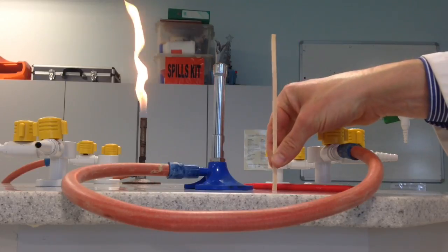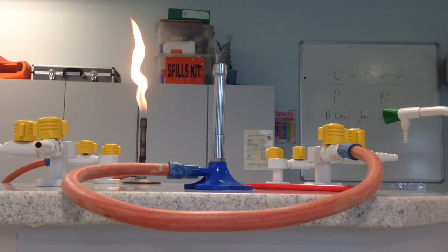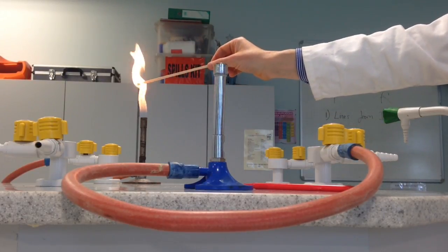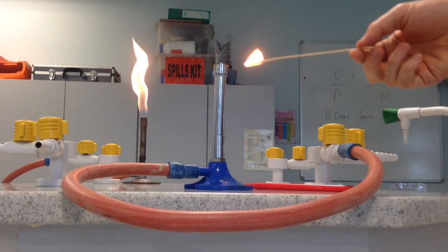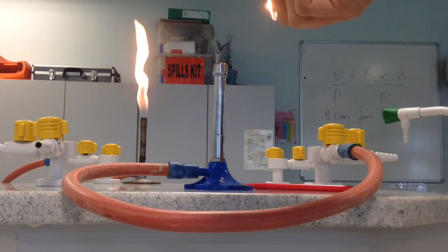Step two, you take your splint and you light your splint from another Bunsen burner in the room. There will be a lit Bunsen burner on my desk. Then bring that lit splint back to your Bunsen burner.